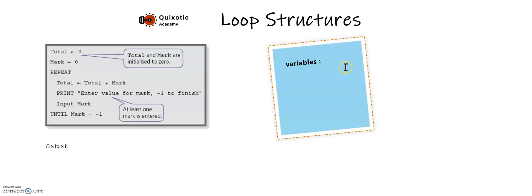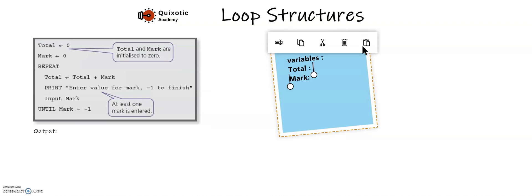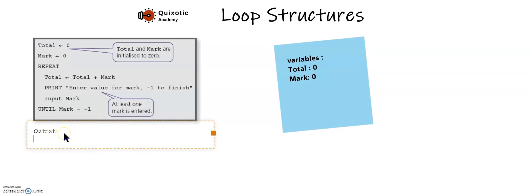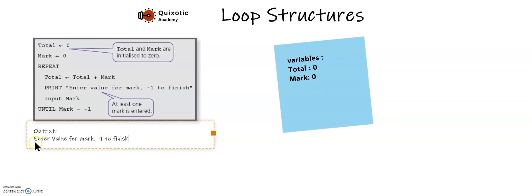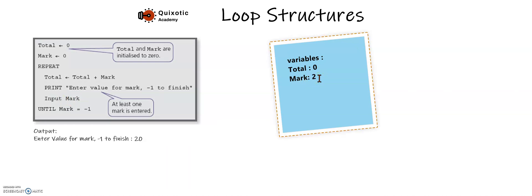In this example there are multiple variables — there is a total variable and a mark variable. In the beginning, total is set to zero and mark is also set to zero. When you run the program, the repeat process starts by calculating the total: total equals total plus marks, which remains zero. Then it asks the user to enter a value for mark, or minus one to finish. If I'm the user and I give it 20 marks, it takes 20 into the variable named mark.